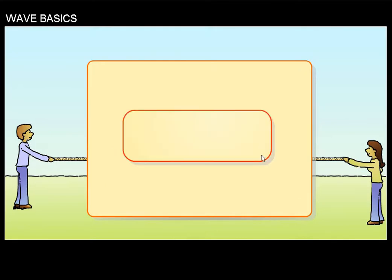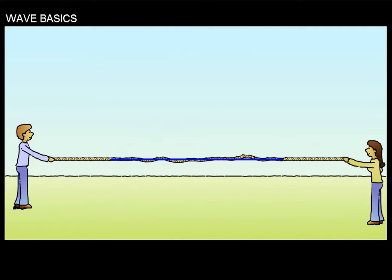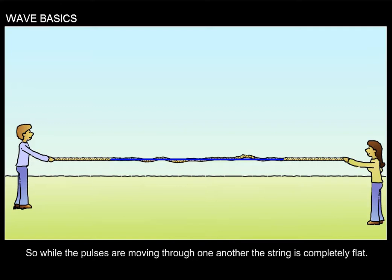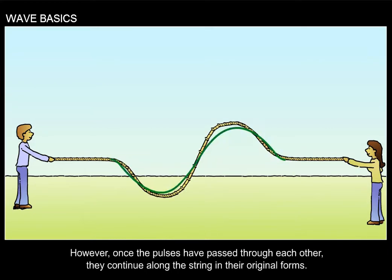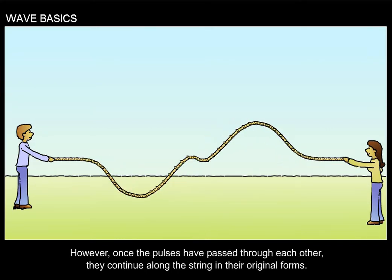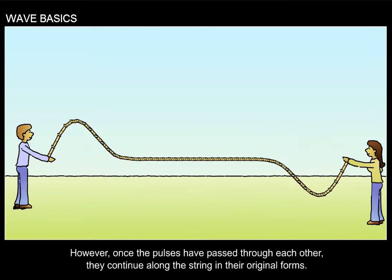C, correct. As the pulses move through each other, they cancel. So while the pulses are moving through one another, the string is completely flat. However, once the pulses have passed through each other, they continue along the string in their original forms.